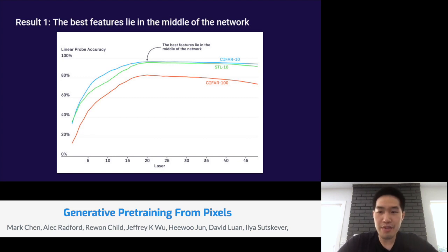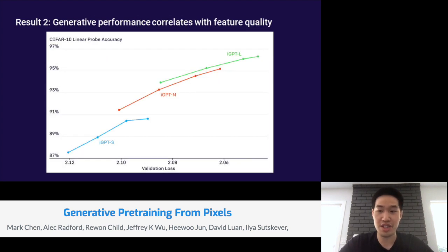Now this behavior suggests that a transformer generative model operates in two distinct phases. In the first phase, each position will gather information from its surrounding context and contextualize it into a representation. In the second phase, this contextualized representation is used to solve the conditional next pixel prediction task. This kind of two-stage performance of our linear probes is reminiscent of another unsupervised neural net, the bottleneck autoencoder, except that the latter is manually designed so that we use the features in the middle.